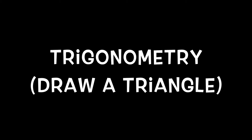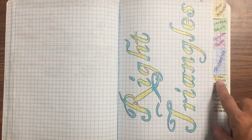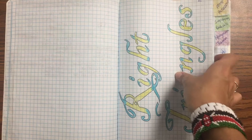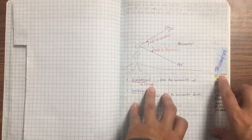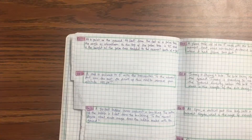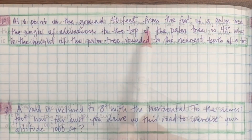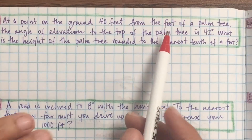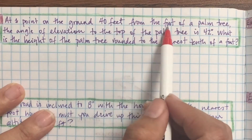I want to take a look at trigonometry. The very first step on how to answer any question is to draw a triangle. If you try and answer a question without drawing a triangle, I will give you no credit at all. So let's take a look at the first example.